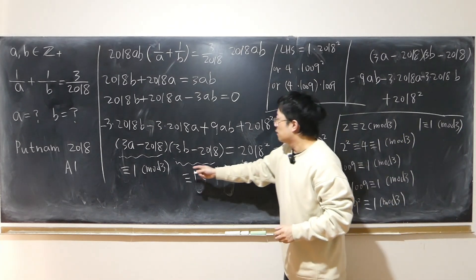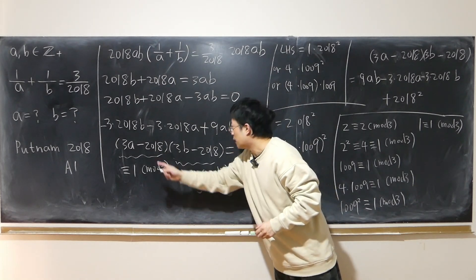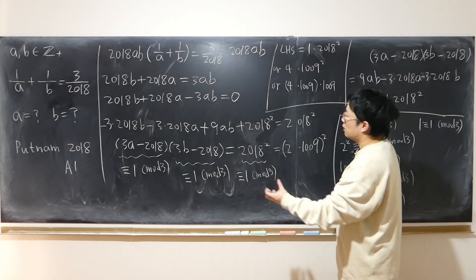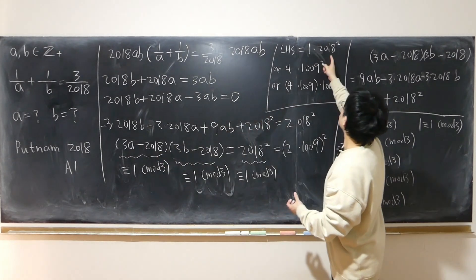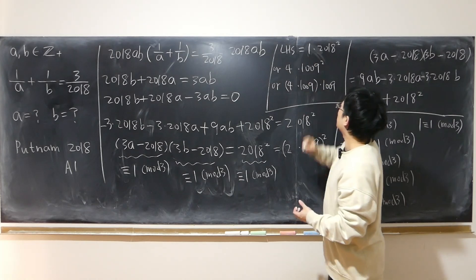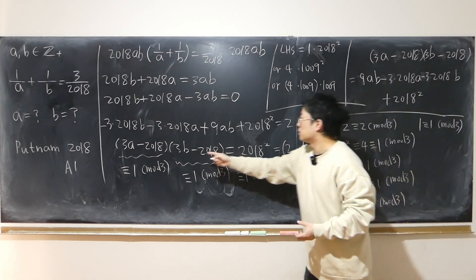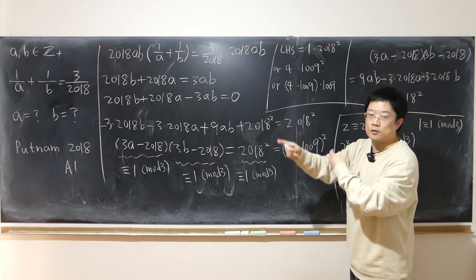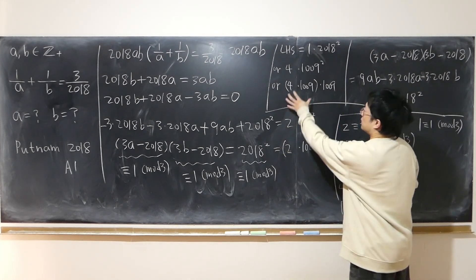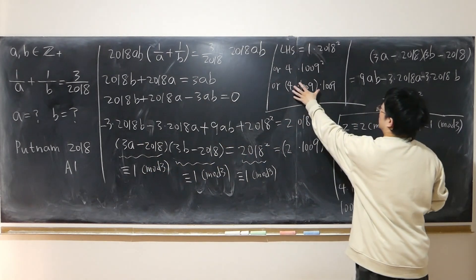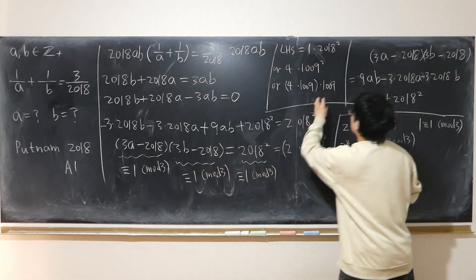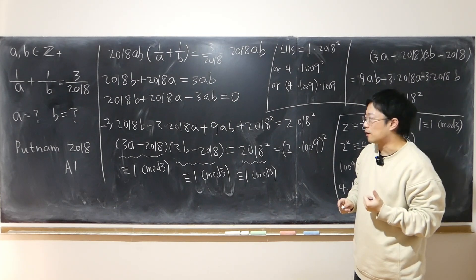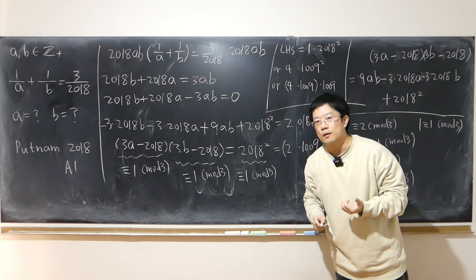The rest is just linear equations. For each factorization, we set one factor equal to one value and the other factor equal to the corresponding value, then swap. This gives us six sets of linear equations, easily solvable, yielding six possible distinct solutions.